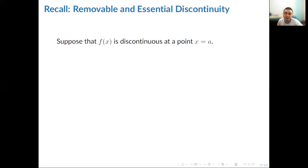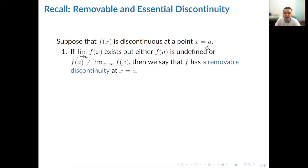Let's also recall removable and essential discontinuity. As mentioned, if any one of the three conditions is not satisfied, f of x is discontinuous at that point. Suppose f of x is discontinuous at a point x equals a. If the limit of the function as x approaches a exists, but either f of a is undefined or f of a is not equal to the limit, then we say that f has a removable discontinuity at x equals a.